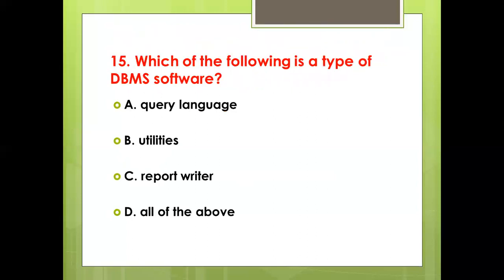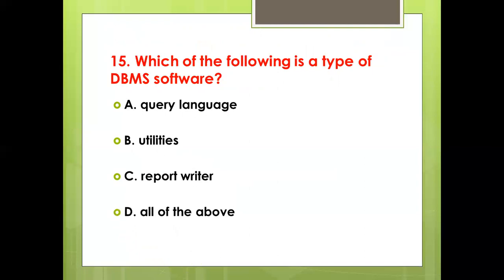Fifteenth bit: Which of the following is a type of DBMS software? Option A: Query Language. Option B: Utilities. Option C: Report Writer. Option D: All the Above. Answer: Option D, All the Above.